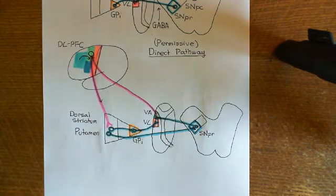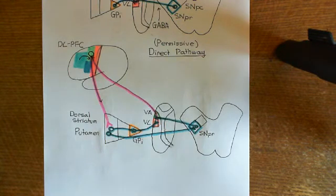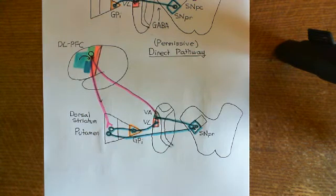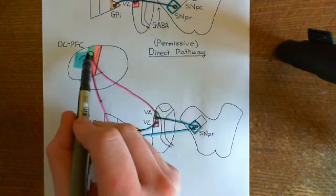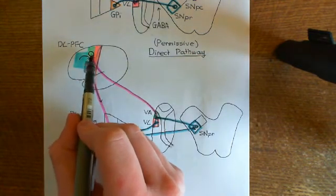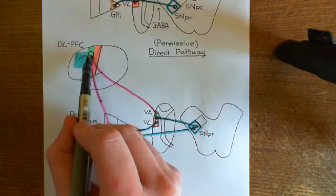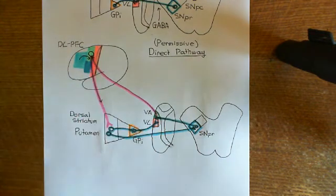Welcome back to this next video in which we are discussing Parkinson's disease and anti-Parkinson drugs. We are currently in the process of discussing the function of the basal ganglia and we have seen how they are involved in this permission signal, which is needed in order for the secondary motor cortex to develop a motor plan properly and then send it to the primary motor cortex to actually be carried out.